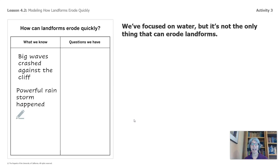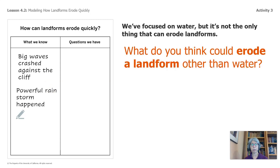Let's get started. We focused on water, but it's not the only thing that erodes landforms. Here's our thinking chart: how can landforms erode quickly? We've been adding things to it. Let's think about what other things can erode landforms other than water. Write down some of your ideas.